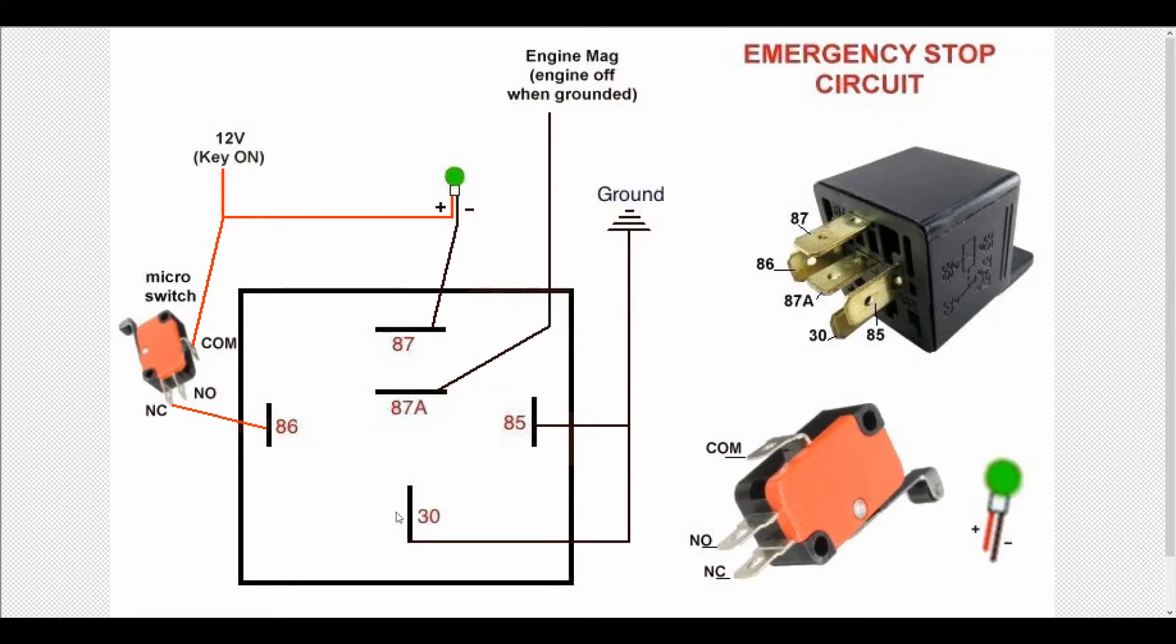The relay is nothing more than a switch like you see here the micro switch. It has a normally closed and a normally open side as well. And in this case the normally open side is going to be pin number 87 and pin number 87A is the normally closed side. In other words if you do not connect power to the relay then pin 30 and pin 87A are connected.